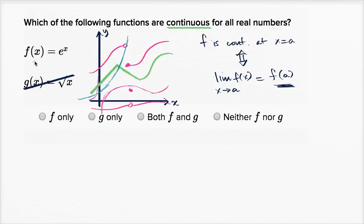So this f of x is continuous for all real numbers. Now I didn't do a very rigorous proof — you could if you like — but for the sake of this exercise, it's really more about getting an intuitive sense. Look, e to the x is defined for all real numbers and there are no jumps or gaps, so it's reasonable to say that it's continuous. But you could do a more rigorous proof if you like as well.